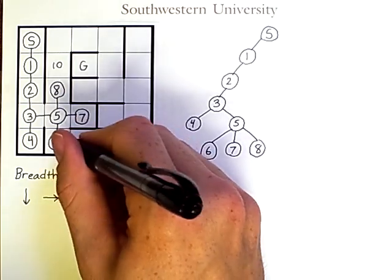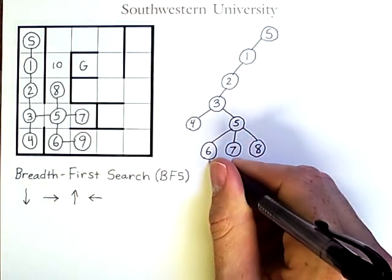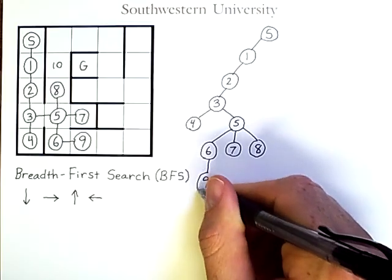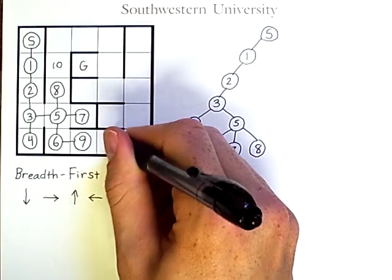From six, I can get to nine, and nine has a successor, which will be the eleventh node I check.